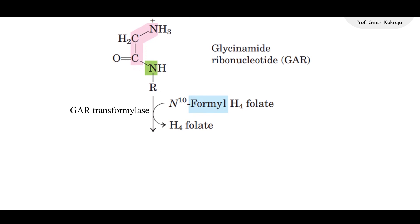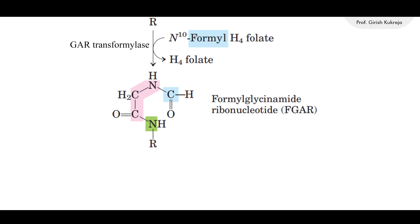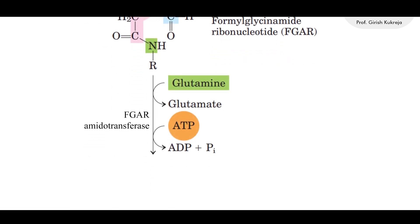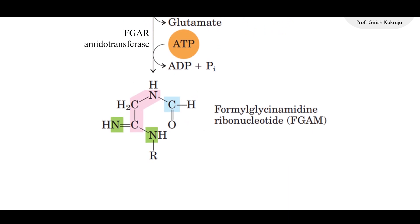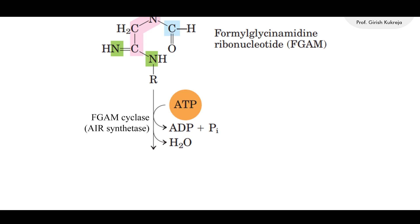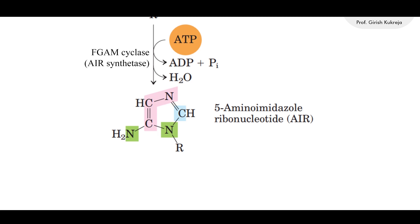In the next step, the amino group of glycine is formylated by N10-formyl tetrahydrofolate, forming formylglycinamide ribonucleotide, FGAR. Nitrogen is then added from glutamine, and with the hydrolysis of ATP, forms formylglycinamidine ribonucleotide, FGAM. This undergoes dehydration and ring closure with ATP hydrolysis, forming 5-aminoimidazole ribonucleotide, AIR.